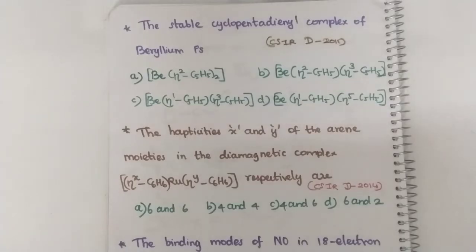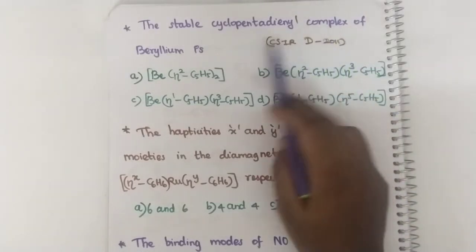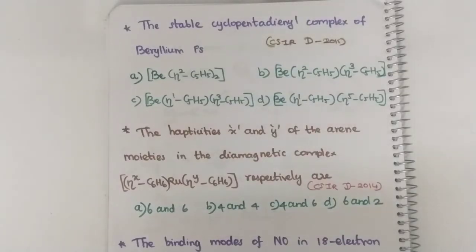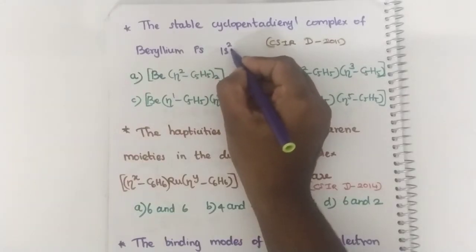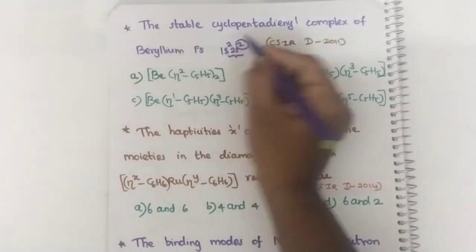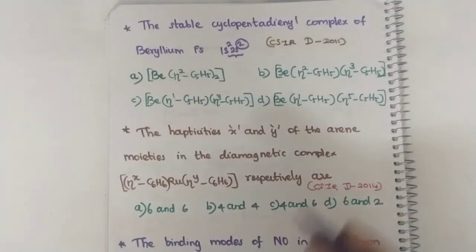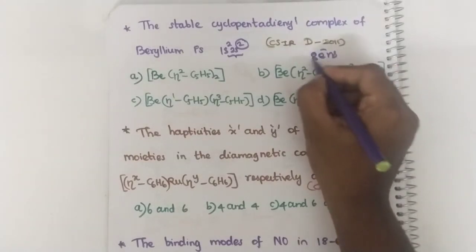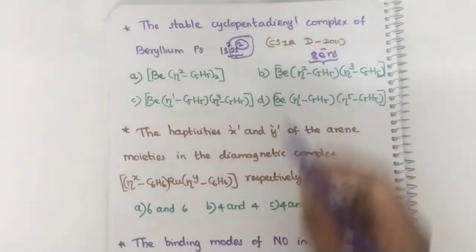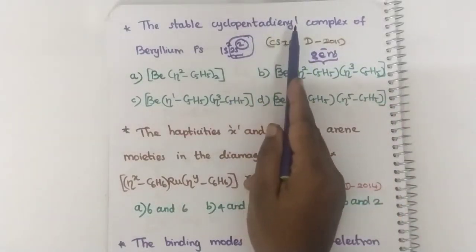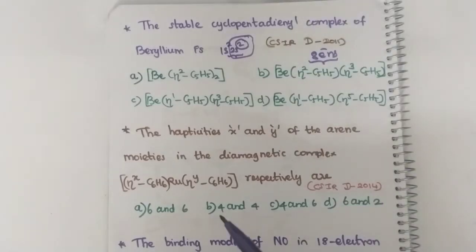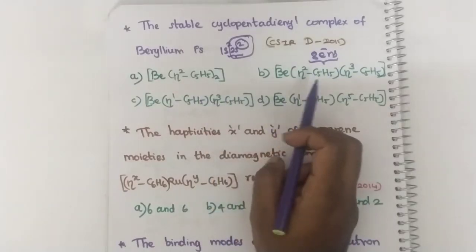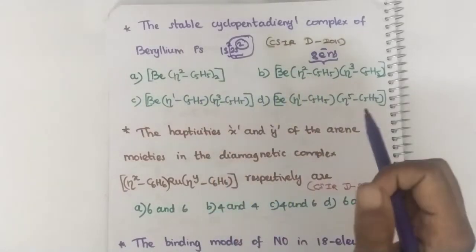In the first question: the stable cyclopentadienyl complex of beryllium is — first of all, what is the configuration of beryllium? Hydrogen, helium, lithium, beryllium — it will be 1s², 2s². The valence electron is only two. Main block elements will be stable when they have 8 electrons. If it has 8 electrons it will be stable. You are having only two electrons, so the cyclopentadienyl ligand must donate 6 electrons for the beryllium complex to be stable.